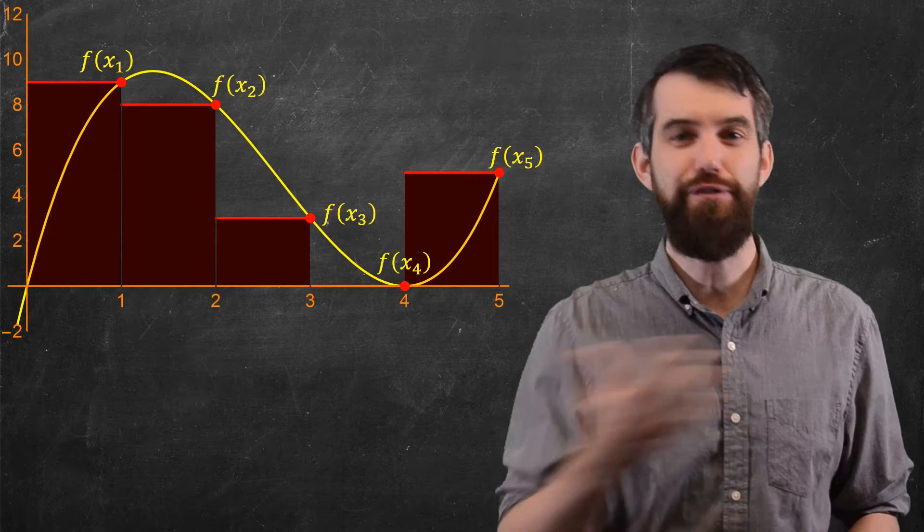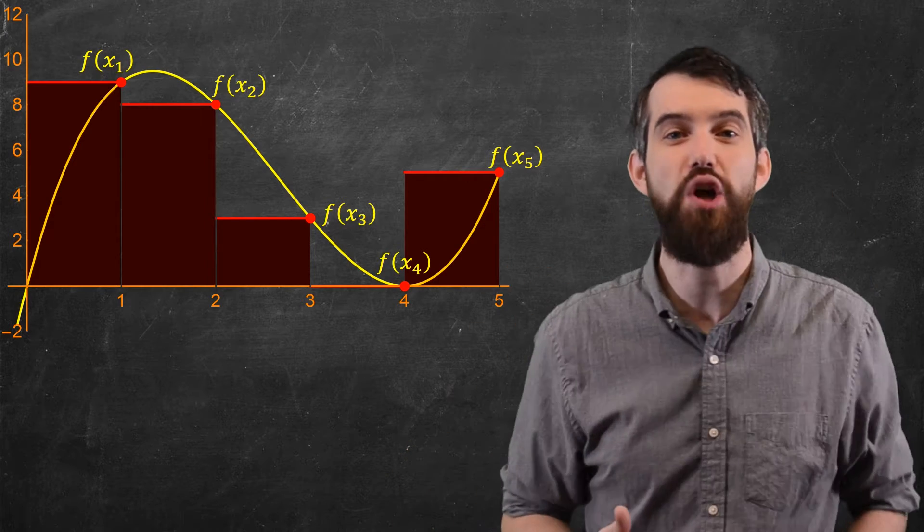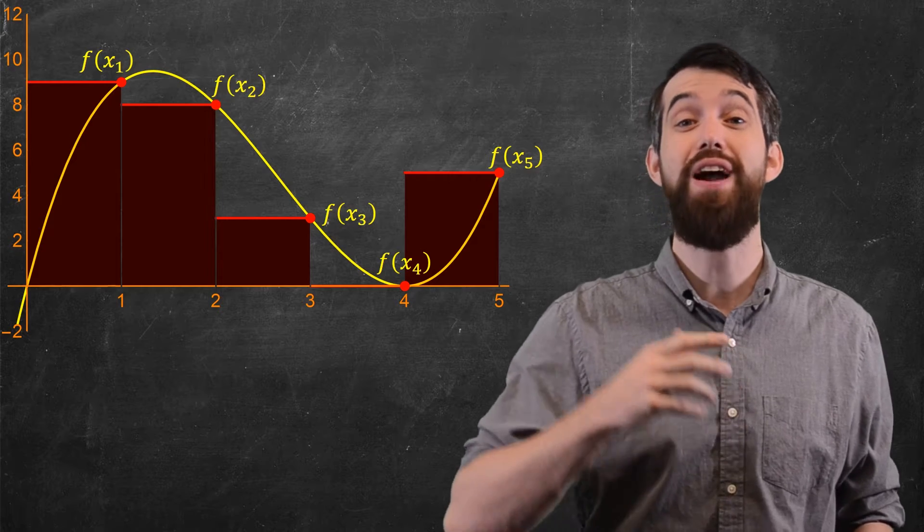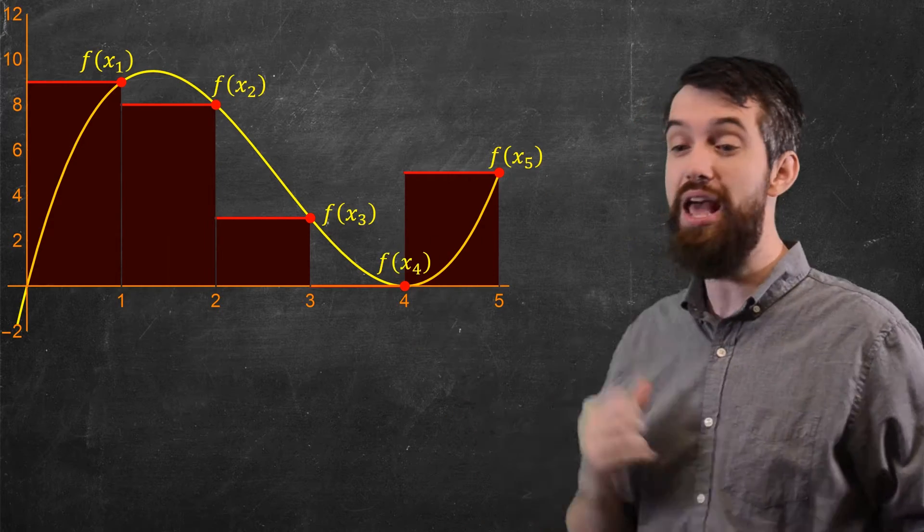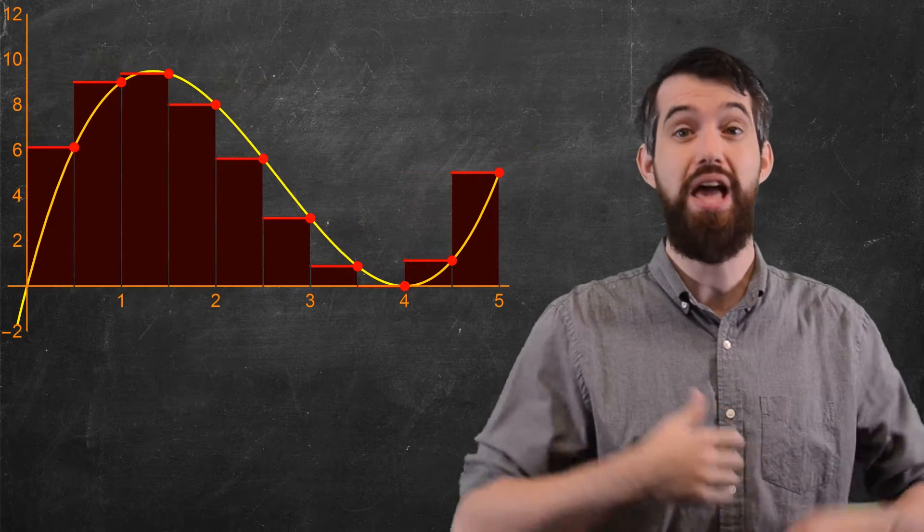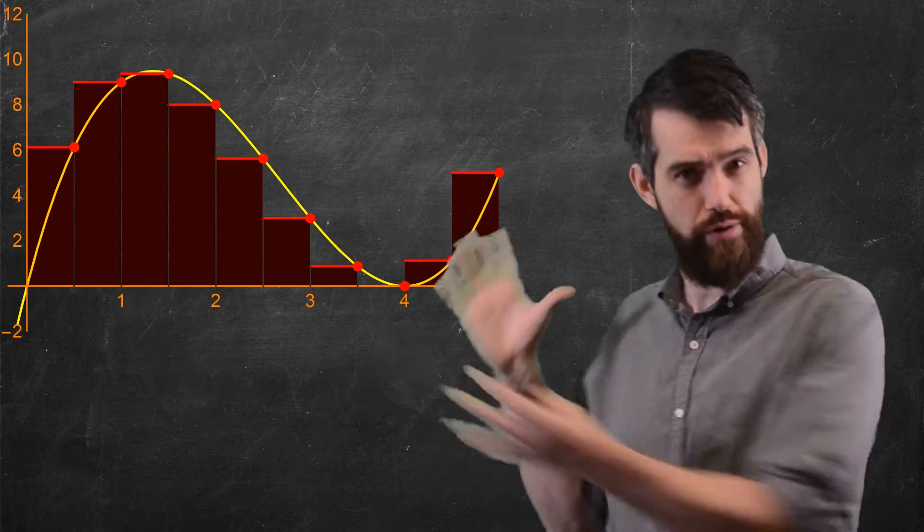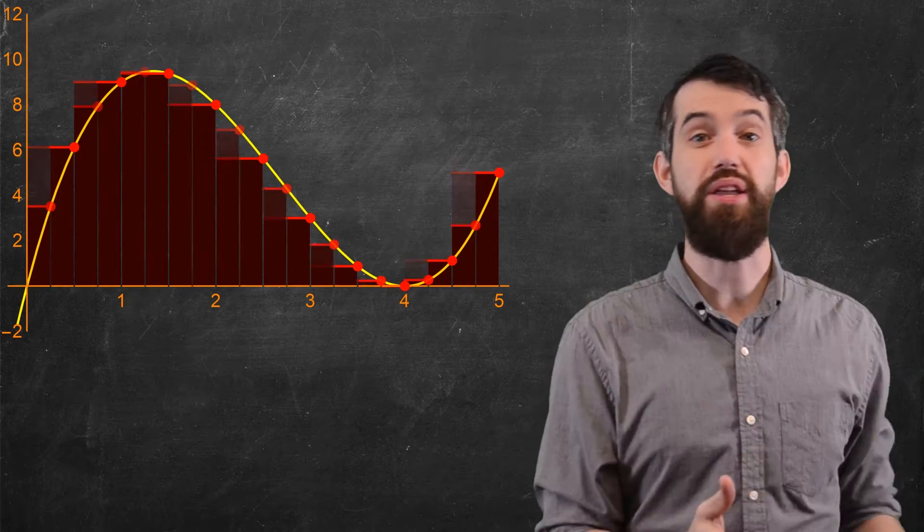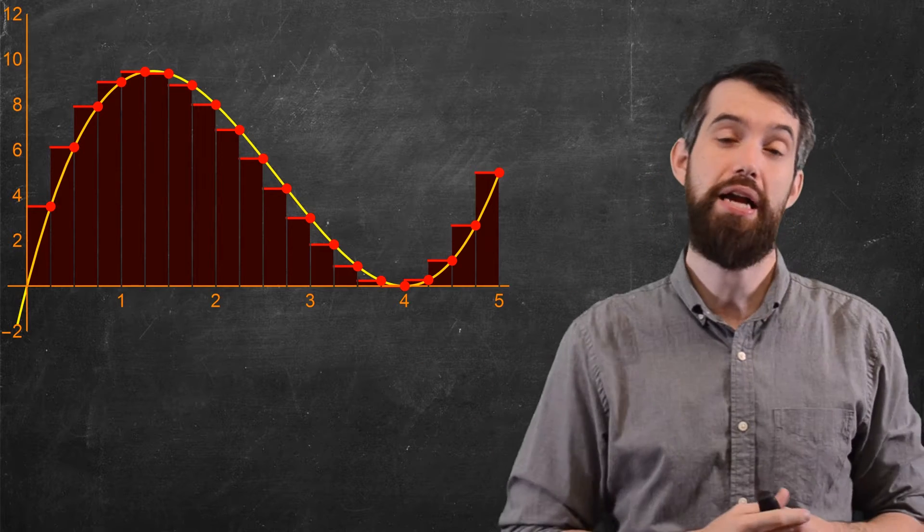Now, the choice of 5 points was just completely arbitrary. Could I not do a better approximation if I add 10 points? So let's do that. If I add 10 different points on, I have a right rectangle sort of approximation there. And indeed, I can be better again by going to 20 different rectangles.